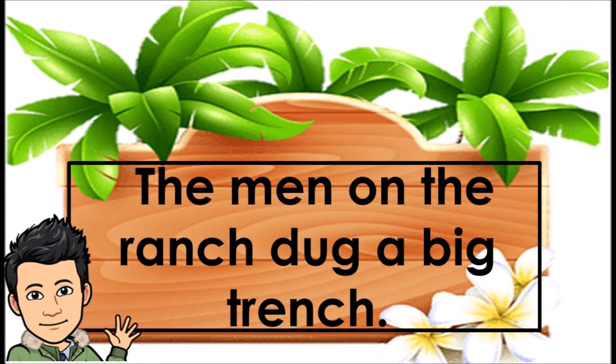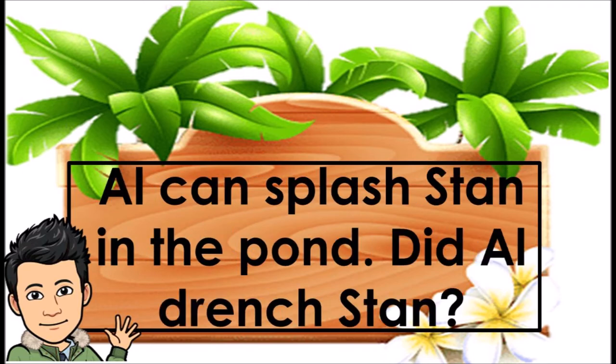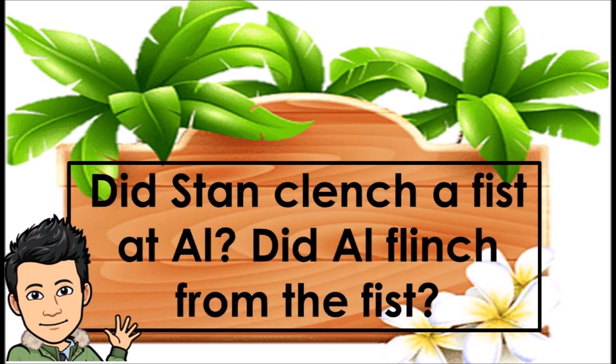Chet set the chest on a bench in the shed. Al can splash Stan in the pond. Did Al drench Stan? Did Stan clench a fist at Al? Did Al flinch from the fist?